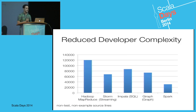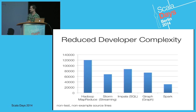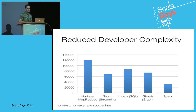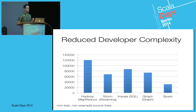Scala really helps us reduce the amount of complexity for developers building the system. This is a comparison of non-test, non-example, non-comment source lines of code in various big data projects. Spark is quite a bit smaller in terms of lines of code and complexity compared to really any of the other systems, especially MapReduce, which is kind of the most analogous system on this chart.